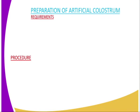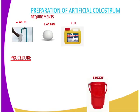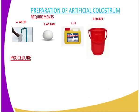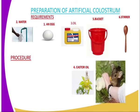Preparation of artificial colostrum — here are the requirements. Number one, an egg. Number two, water. Number three, cod liver oil. Number four, castor oil. You also require a bucket where the mixing will take place, and number six, you need a stirrer.